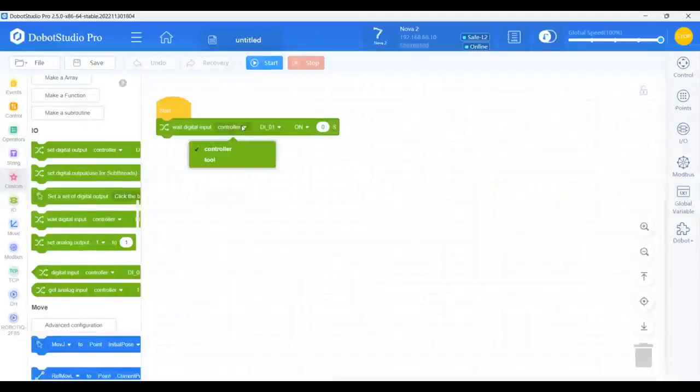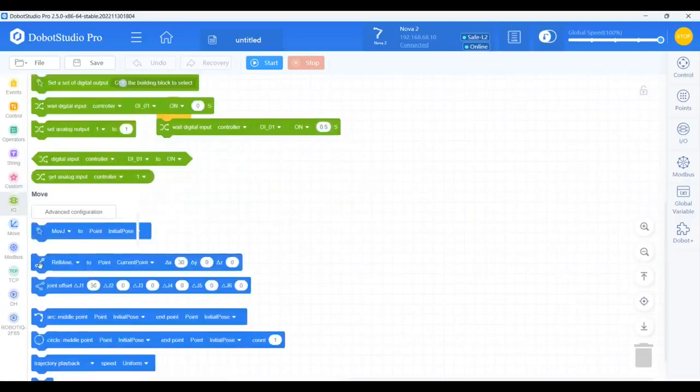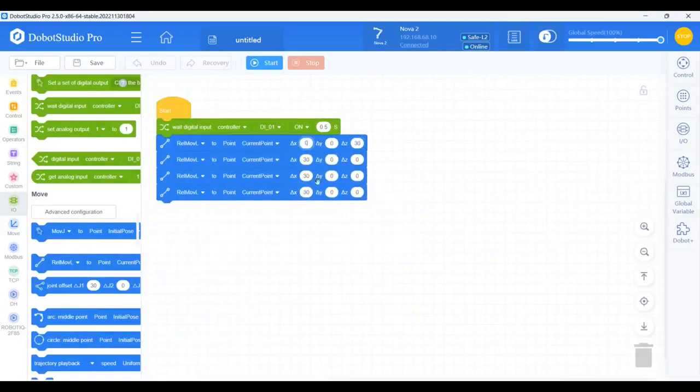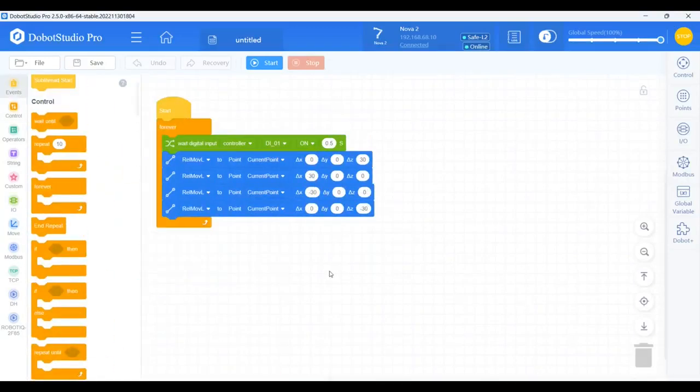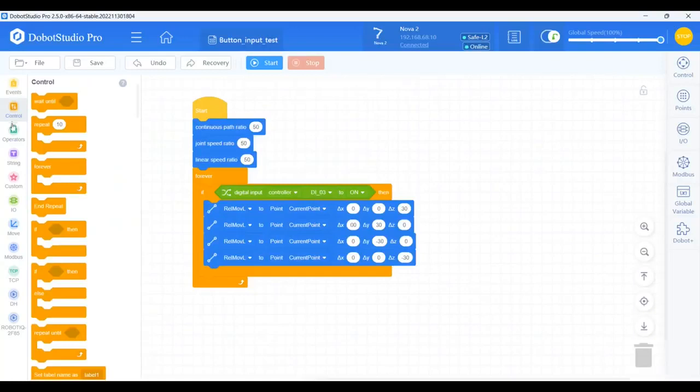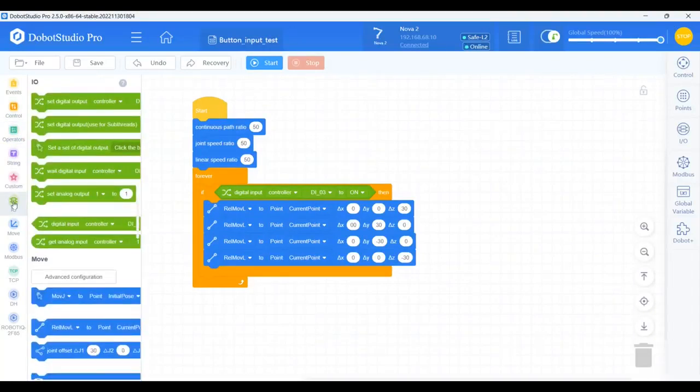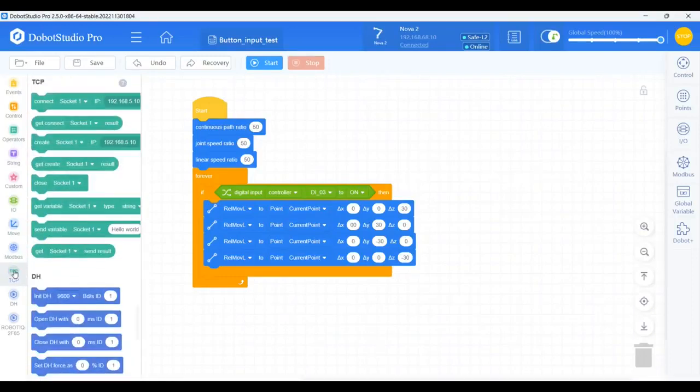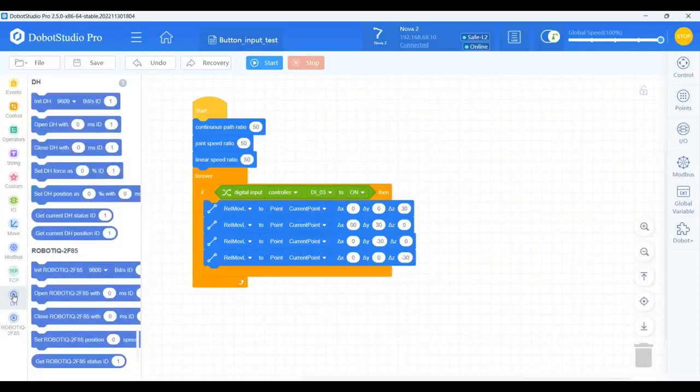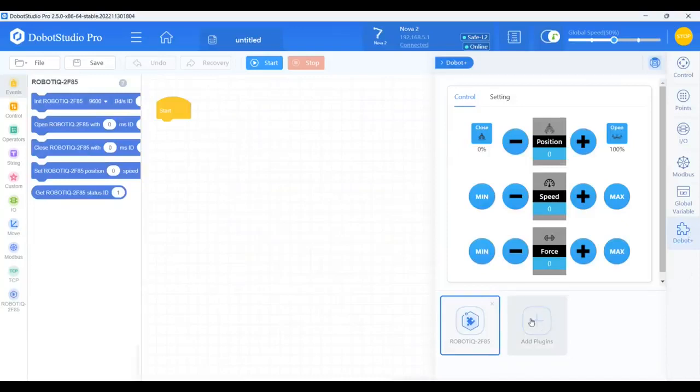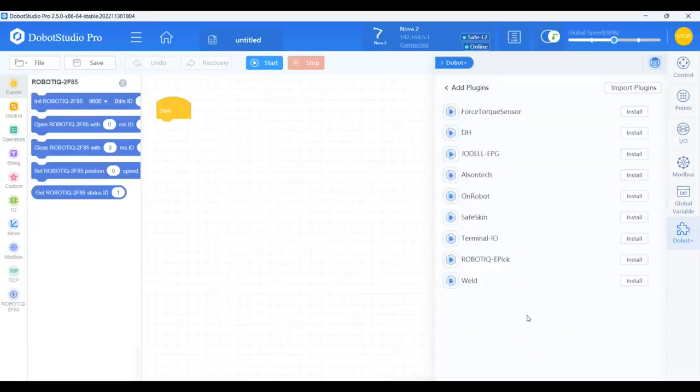The program you are seeing is made in the blockly environment of the included software. This is an extremely user friendly yet powerful method for programming your robot arm. It has blocks for loops, if statements, math functions, custom variables, IO handling, various movement types and also things like network communication. There is also a nice integration of grippers from third parties like the DH Robotics gripper that I have installed. After selecting it in the software all available commands for the gripper are included in the blockly environment so it can be used in your program.